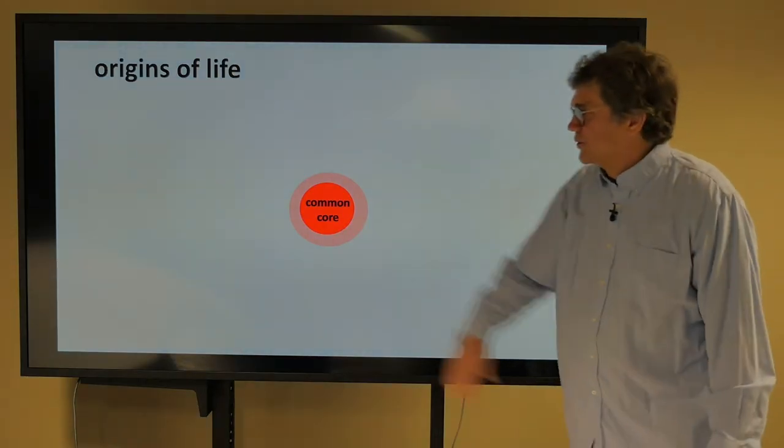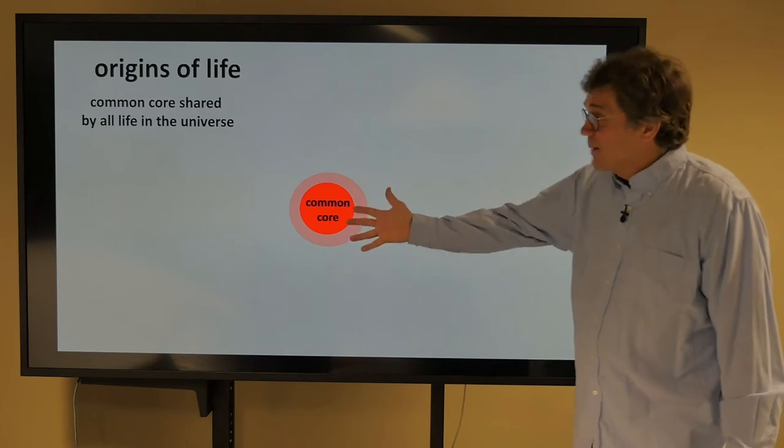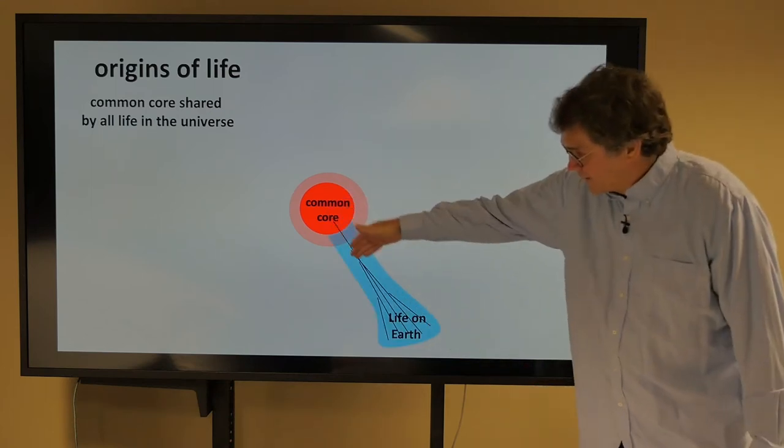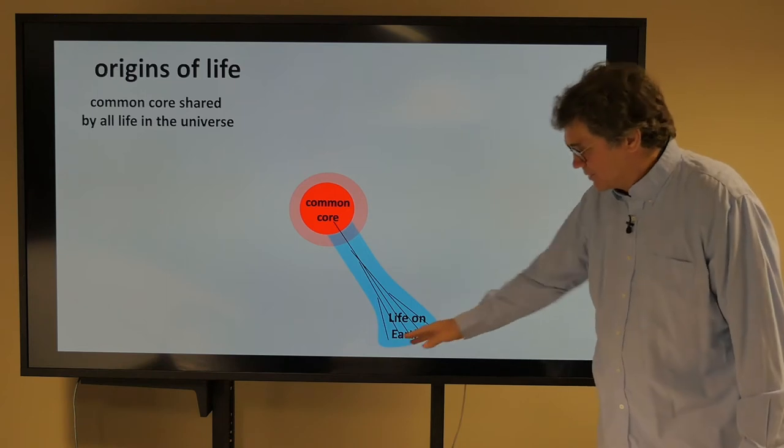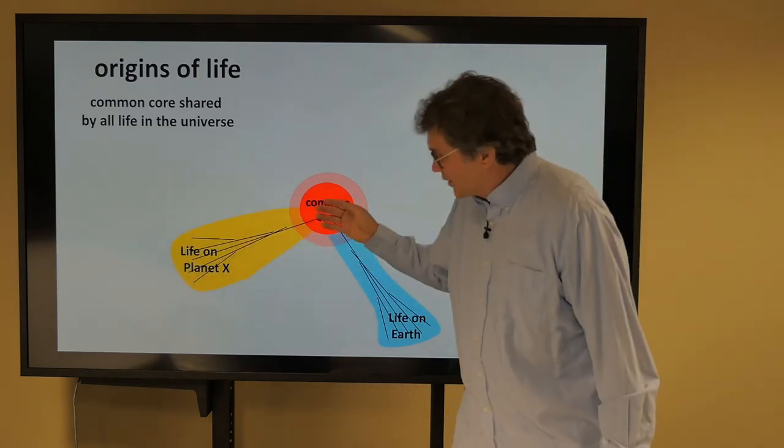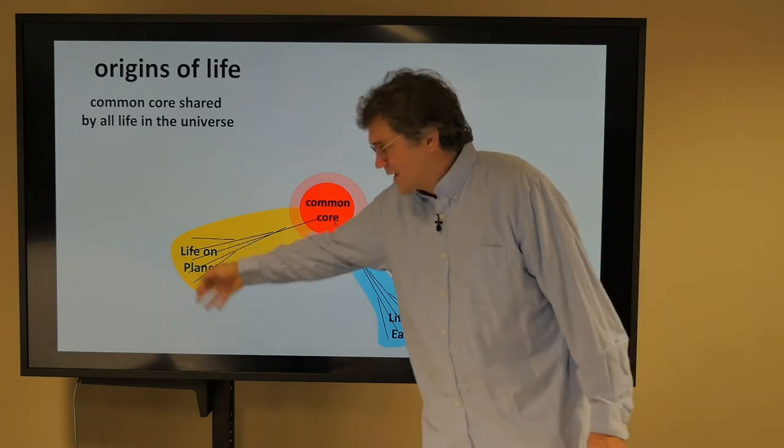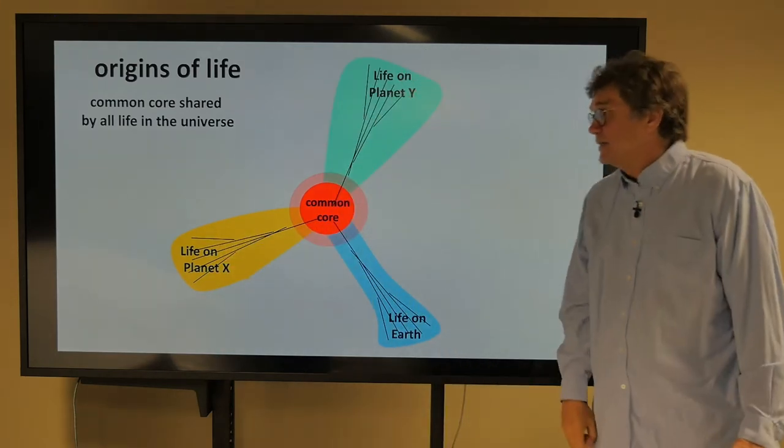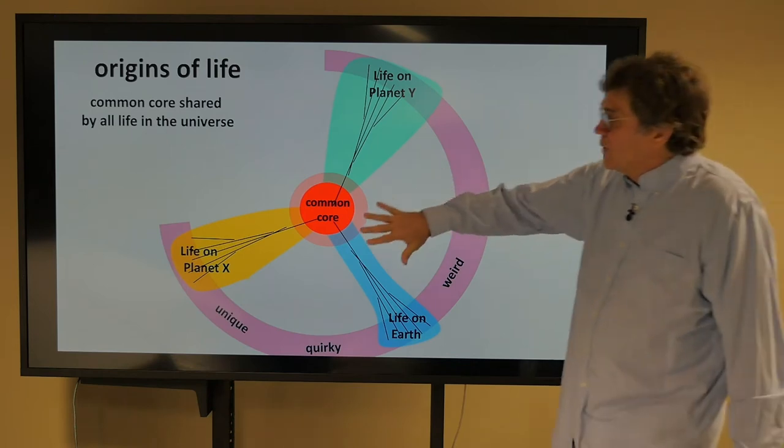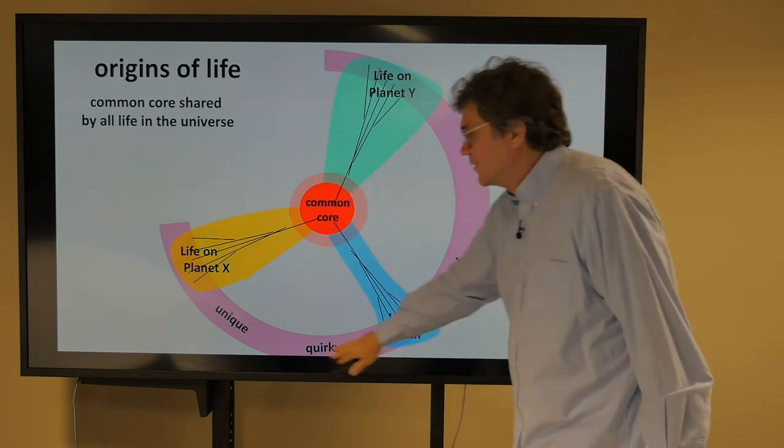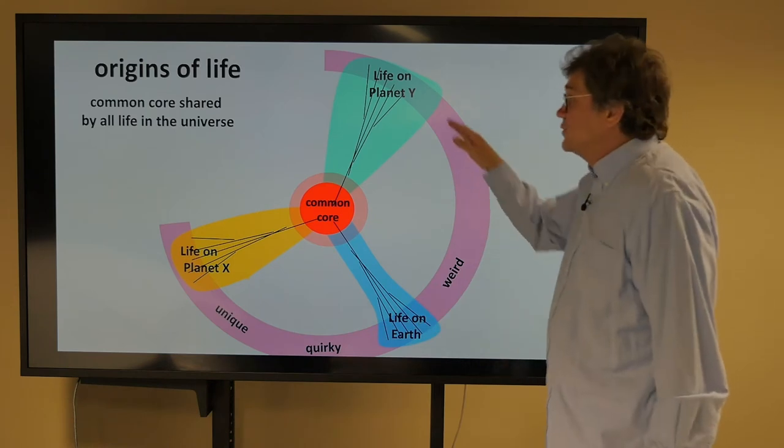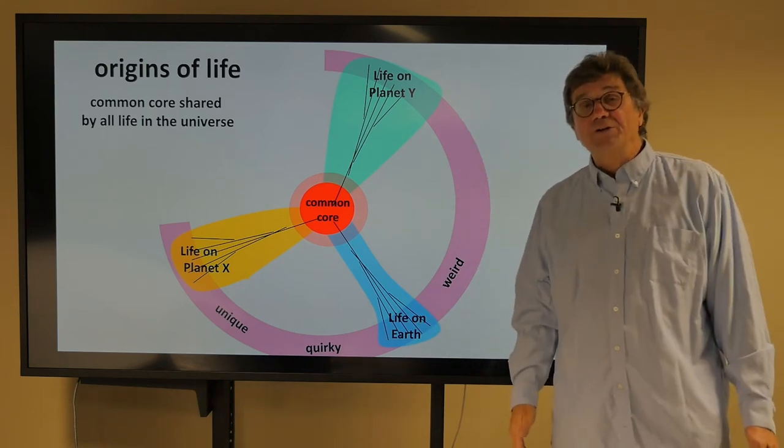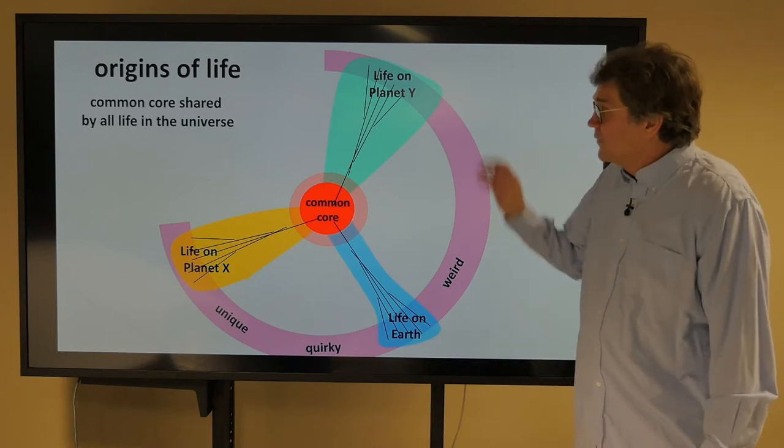So we have the origins of life, and here's a common core. So here's the common core that's shared by all life in the universe. We have life on Earth evolving out of the core, and then producing elephants and people and bacteria. Over here on planet X, we have also a common core where life started, and then all kinds of weird life forms that we know nothing about. And then on planet Y, the same deal. So if this is common, these are the quirky, weird, probably unique outcomes of three or four or five billion years of evolution on these other planets.